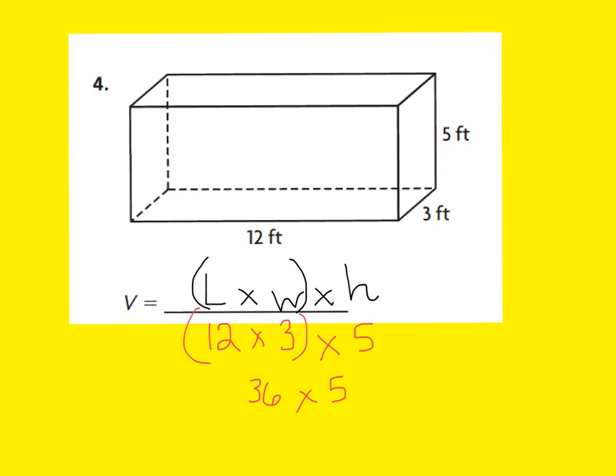I'm going to use the distributive property. I'm going to break apart my 36 to be a 30 and a 6, and I'm going to multiply both of those by 5. So it will be 5 times 30, as well as 5 times 6. Now I can find my two partial products. 5 times 30 is 150, and 5 times 6 is 30. So my final product is going to be 180.